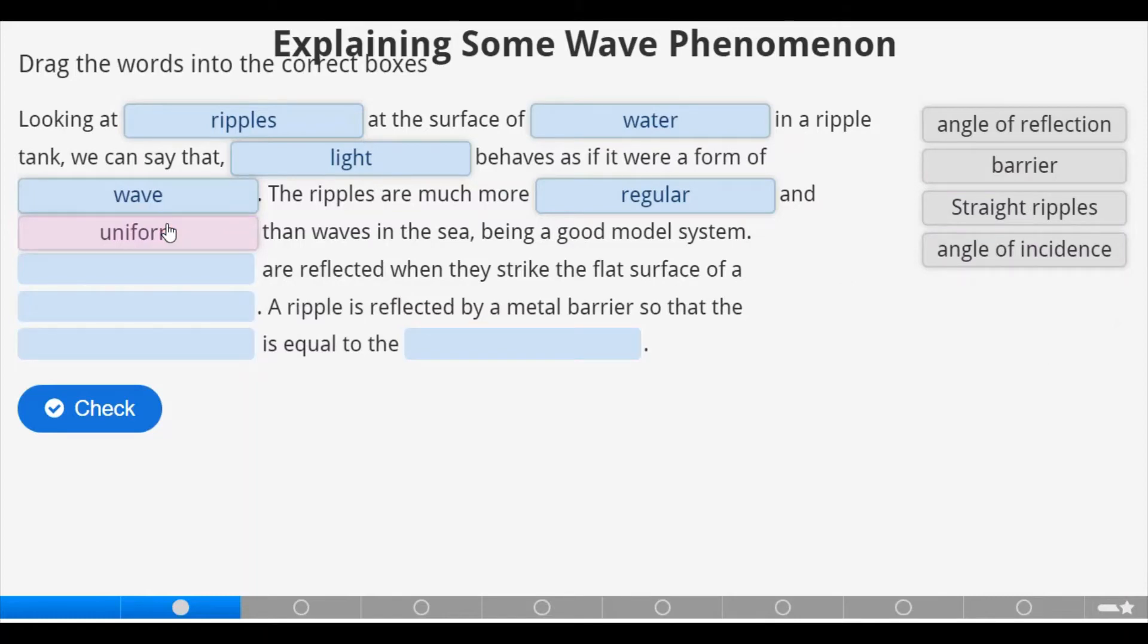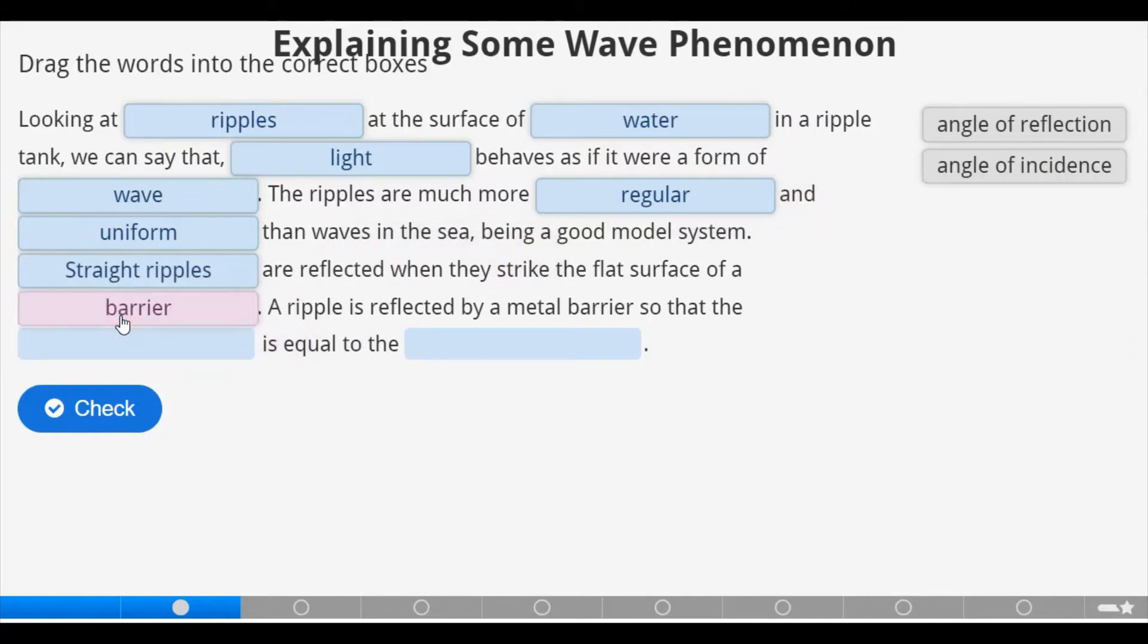The ripples are much more regular and uniform than waves in the sea, being a good model system. Straight ripples are reflected when they strike a flat surface of a barrier.